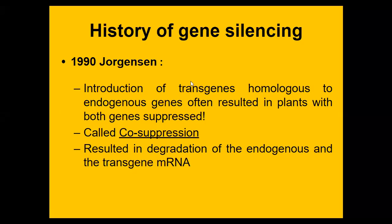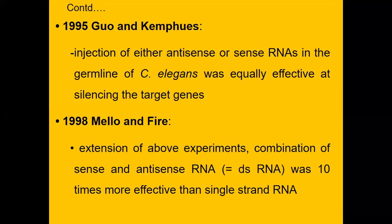This is RNA interference. The history of gene silencing starts from 1990, when introduction of a transgene homologous to endogenous genes often resulted in plants with both genes silenced — co-suppression — resulting in the degradation of endogenous transgene mRNA. In 1995, injection of either antisense or sense RNA in the germline of C. elegans was equally effective at silencing target genes.